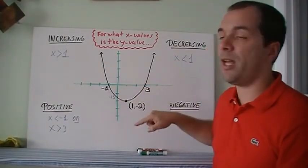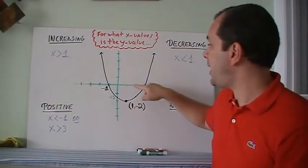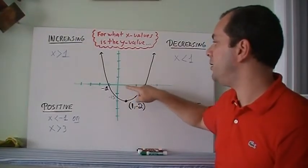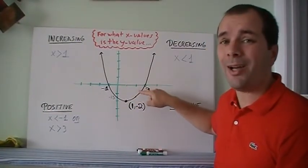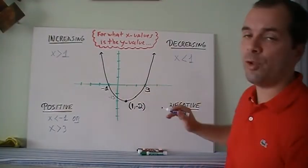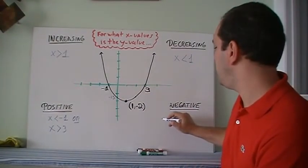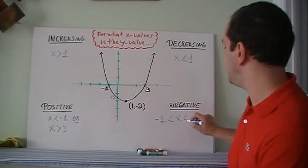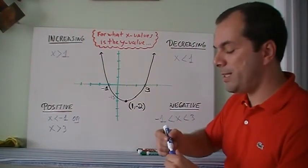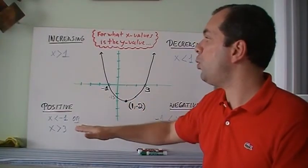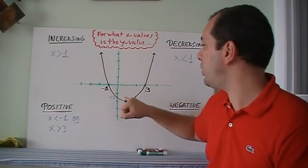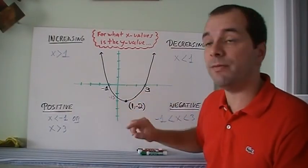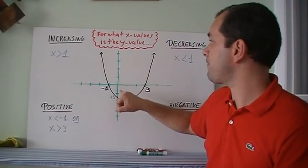What happens between minus 1 and 3? If I plug in x equals 0, I'm going to get a negative y value. If I plug in x equals 1, I'm going to get a negative y value. If I plug in x equals 2 or anything in between, I'm going to get a negative y value. So that's just like we do for domain and range — we're going to have the minus 1 and the 3. Notice that at no point did I put an equal sign, because right at minus 1 or right at 3, that's 0 — it's not positive nor negative.